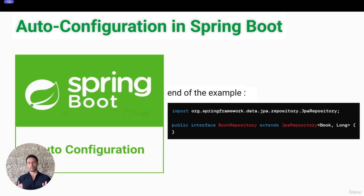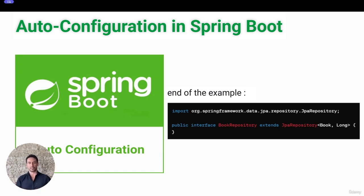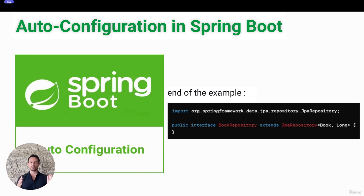With just these steps, Spring Boot automatically configures the JPA data source and the in-memory H2 server, and you can start using the BookRepository to manage your data. This example illustrates the power of auto-configuration in Spring Boot, allowing developers to focus on the business logic of their application rather than configuring the underlying components.